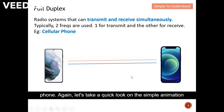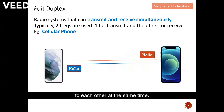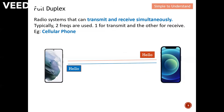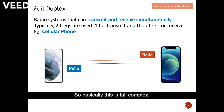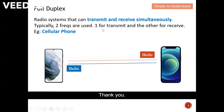Let's take a quick look at the animation. You can see that two phones can talk to each other at the same time — both can send the message 'Hello' simultaneously. This is full duplex: the radio system is allowed to transmit and receive simultaneously. With this, I end my video. Please like and subscribe, thank you!